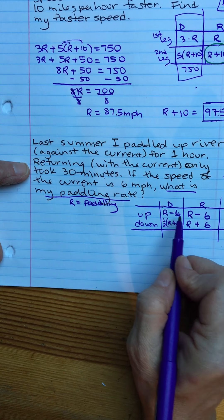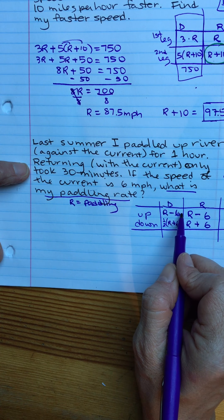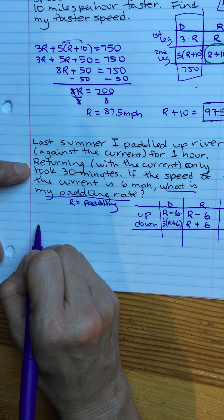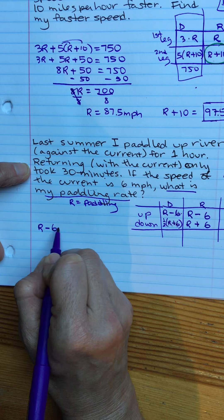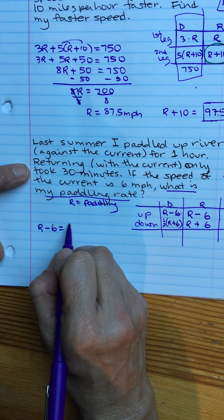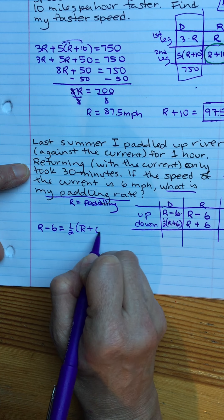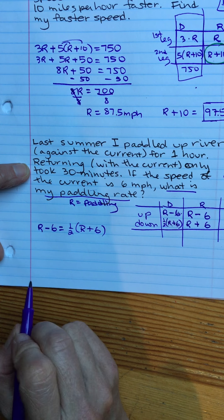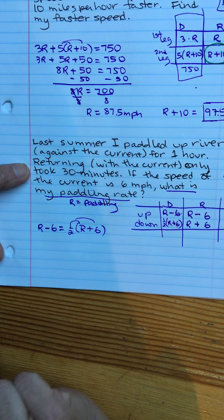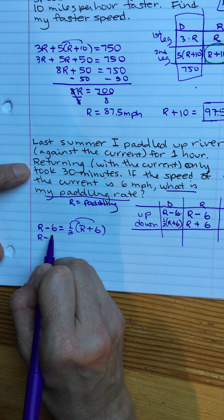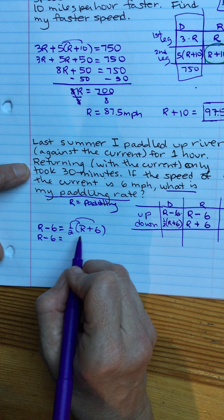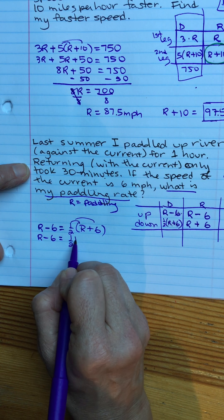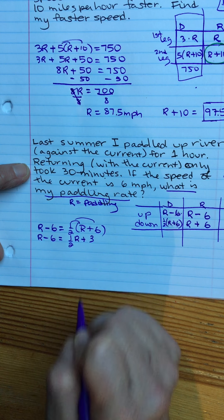Now these two distances are the same because however far I go up, I go the same amount down. So here's the equation. R minus six equals one half times the quantity R plus six. Get rid of your parentheses by distributing. Left side's just waiting. R minus six equals one half R plus one half times six is three.